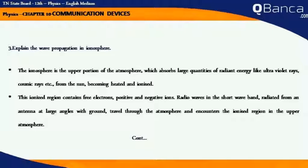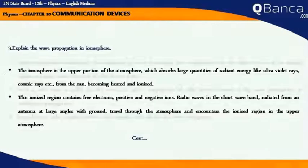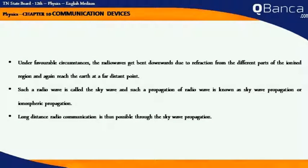Radio waves in the short wave band radiated from an antenna at large angles with the ground travel through the atmosphere and encounter the ionized region in the upper atmosphere. Under favorable circumstances, the radio waves get bent downwards due to refraction from different parts of the ionized region and again reach the earth at a far distant point. Such a radio wave is called a sky wave, and such propagation is known as sky wave propagation or ionospheric propagation. Long distance radio communication is thus possible through sky wave propagation.